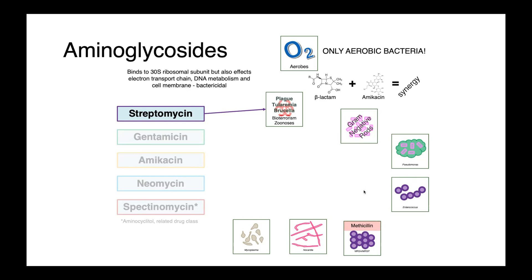The aminoglycosides are also frequently combined with beta-lactam type drugs for synergy. The way that we think of this working is that the beta-lactam breaks down the cell wall and allows enhanced entry of the aminoglycoside into the cell, leading to a synergistic 1 plus 1 equals 3 type situation.